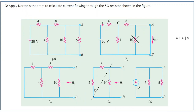Let's do one more problem: by Norton's theorem, calculate the current flowing through the 5 Ω resistor shown in the figure. The circuit has a 20 V DC supply (assume zero internal resistance), resistors of 4 Ω, 4 Ω, 8 Ω, and 10 Ω, with the 5 Ω as the load resistance between the output terminals. We need to find the load current.